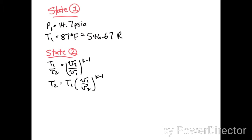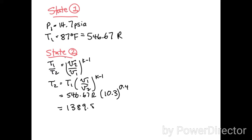To solve for state two, we know the process is isentropic compression, so we use the isentropic formulas. We plug in T1 = 546.67 R, our compression ratio of 10.3, and k for air is 1.4, so k minus 1 is 0.4. We calculate a temperature T2 of 1389.5 Rankine.